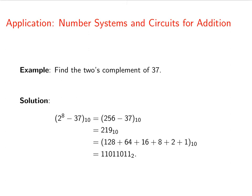We do that by adding up various powers of 2 to get 219. And so our final result is going to be 11011011. So this right here is the two's complement of 37.